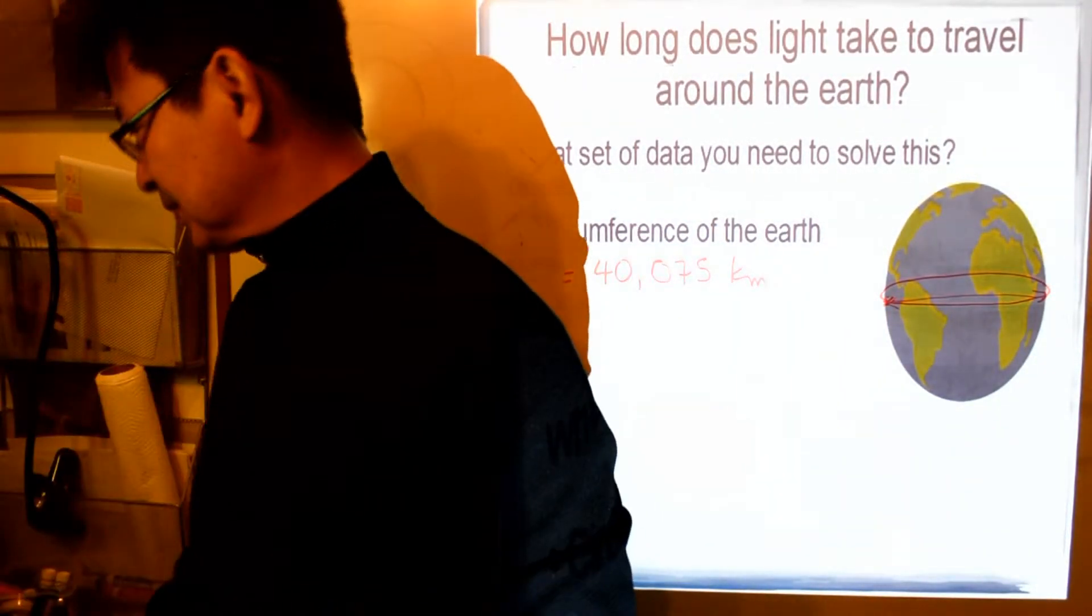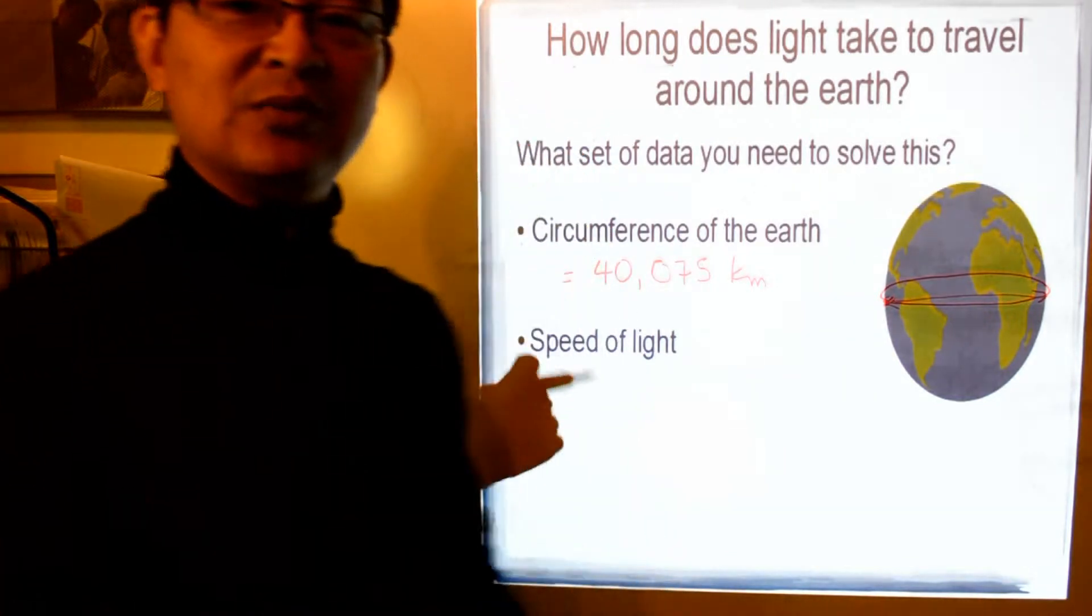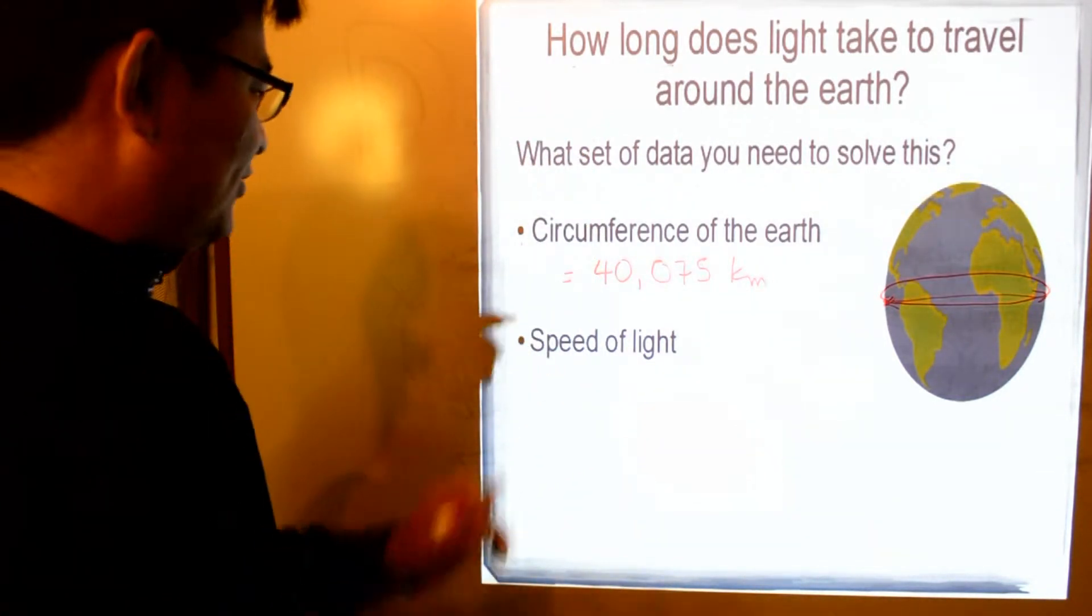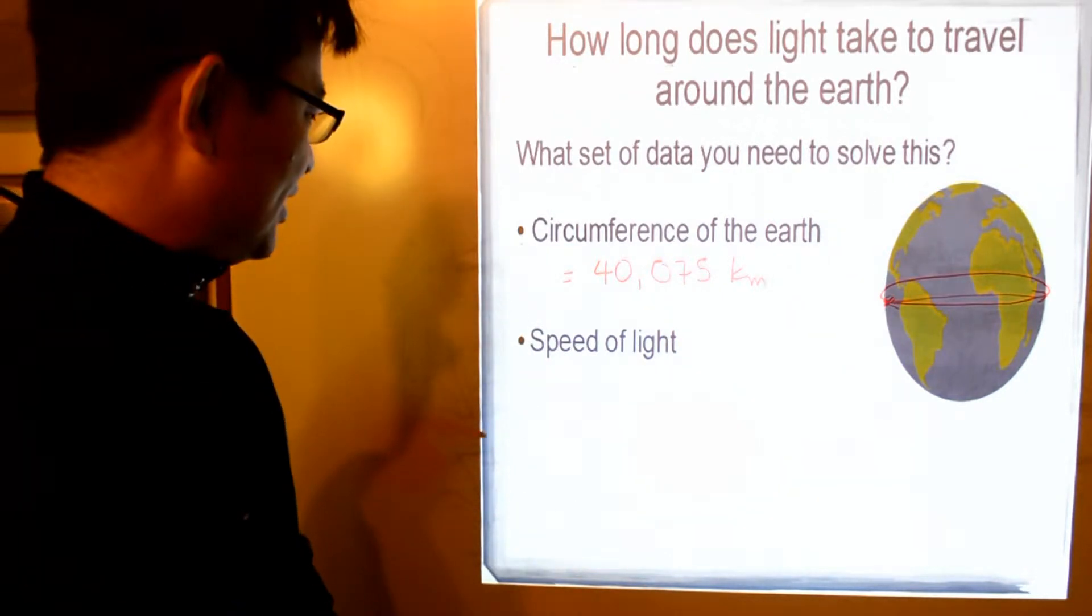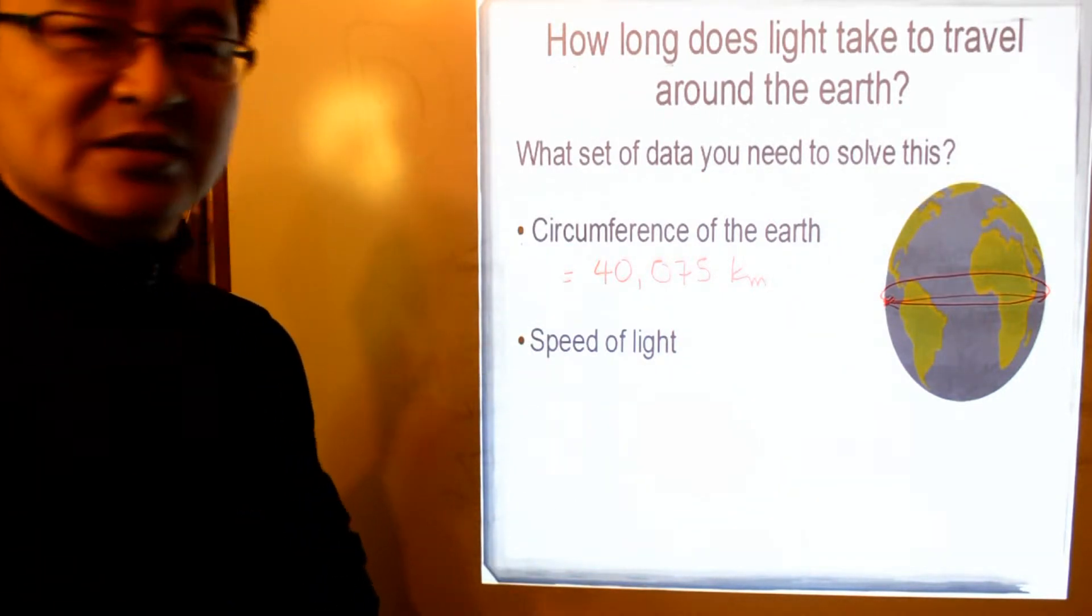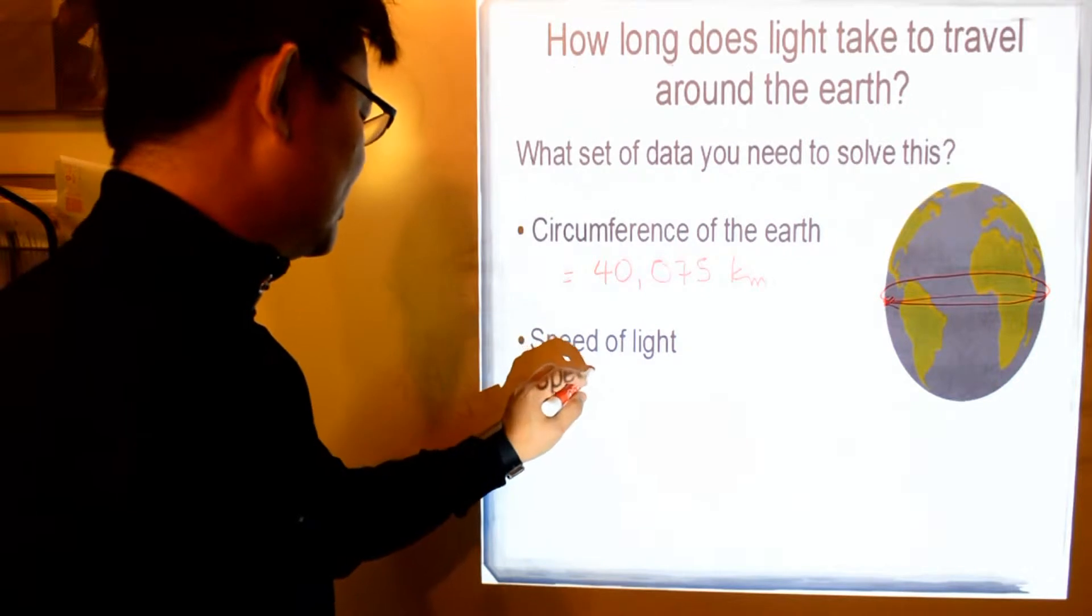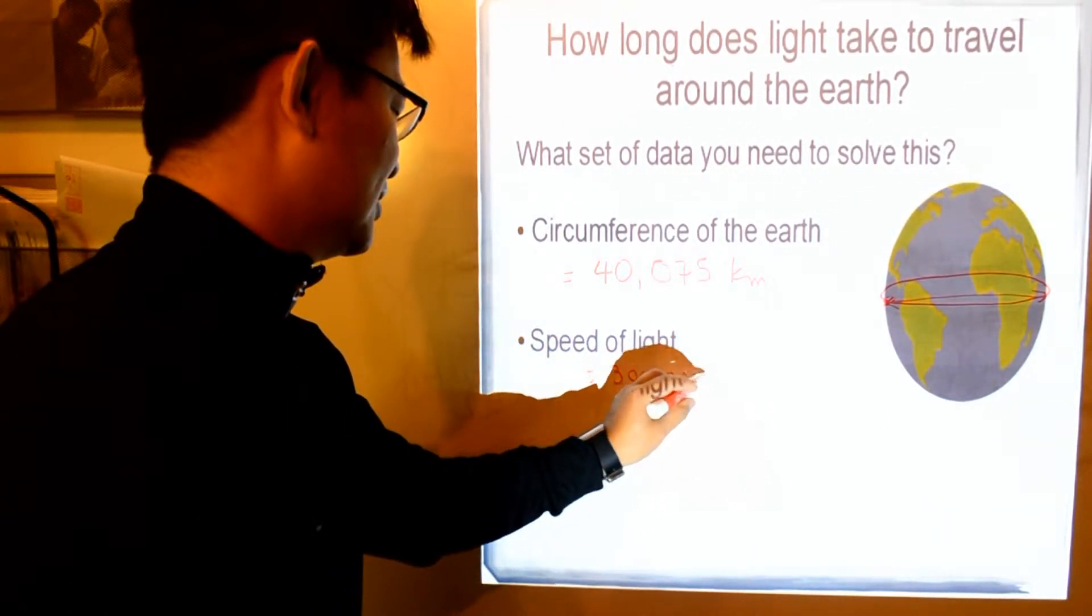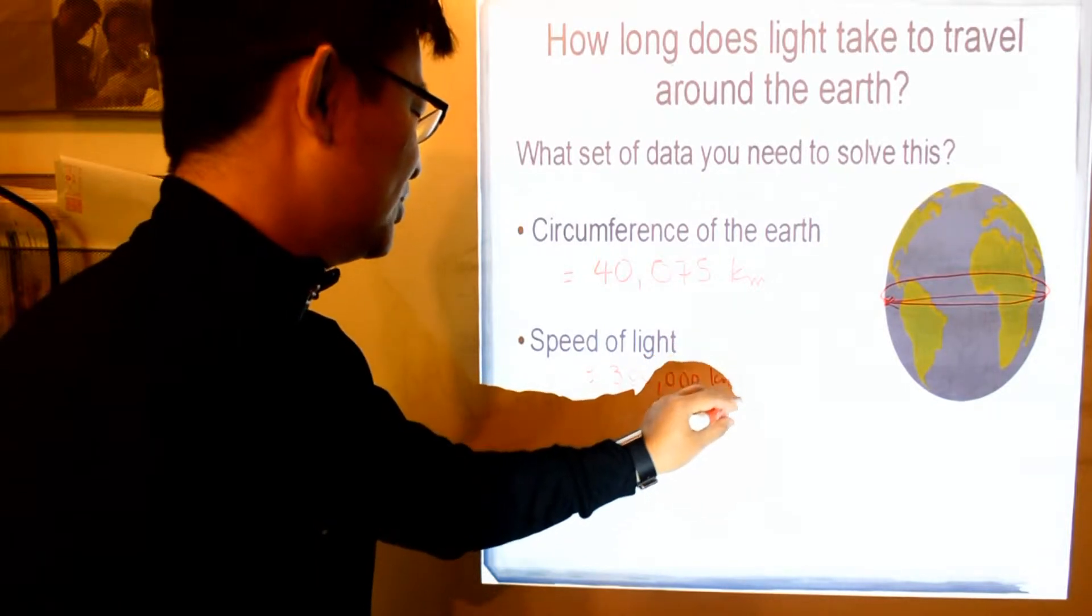What else do we need? Well, we need the speed of light. What is the speed of light? How fast does light travel? Now, thank goodness light travels at constant speed, which is about 300,000 kilometers per second.